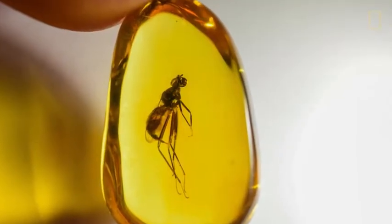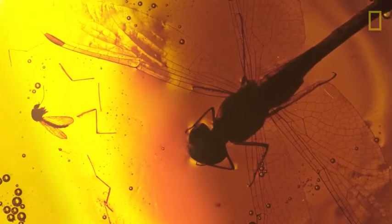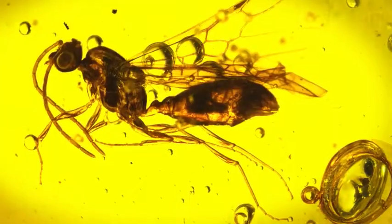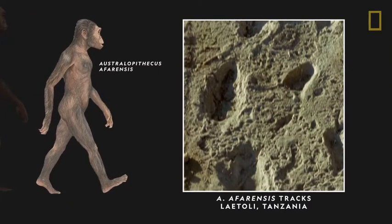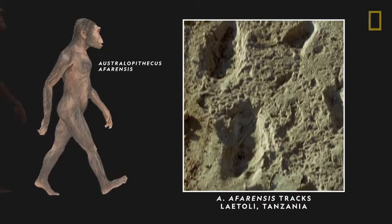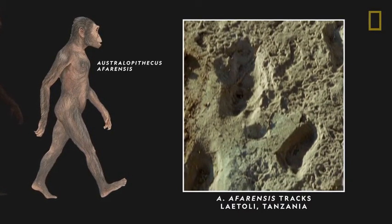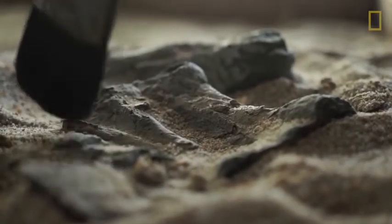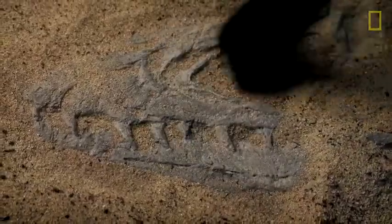Insects encased in amber have been so well preserved that their genetic material was extracted and partially sequenced. And footprints left behind by ancient hominins help paint a picture of what life was like for early human ancestors millions of years ago. With every fossil uncovered, the planet's ancient past becomes clearer, helping shape our understanding of our world today.